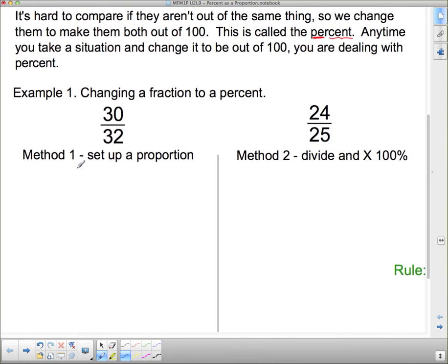Method 1 - we're going to set up a proportion. I want to change 30 over 32 into something out of 100. I set up my proportion, 30 over 32 equals something out of 100. I don't know what it is, so I'm giving it an x. Now I can do whatever method I wanted before. There's no easy way to get from 32 to 100 in multiplication, so probably one of our algebraic solutions will work. Let's try cross-multiplying. 32 times x gives us 32x.